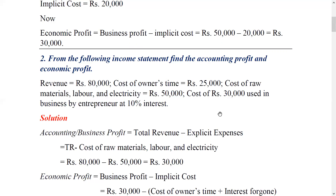The revenue is 80,000. The cost of the owner's time is included — the business firm owner acts as manager or director of the business. The cost of raw materials, labour, and electricity is also included. Additionally, there is a cost of 30,000 used in the business by the entrepreneur at 10% interest.